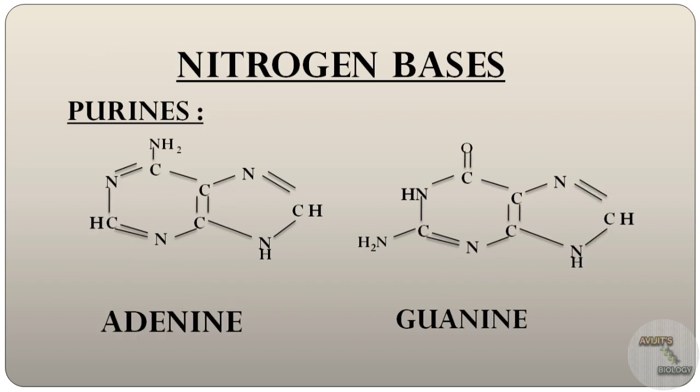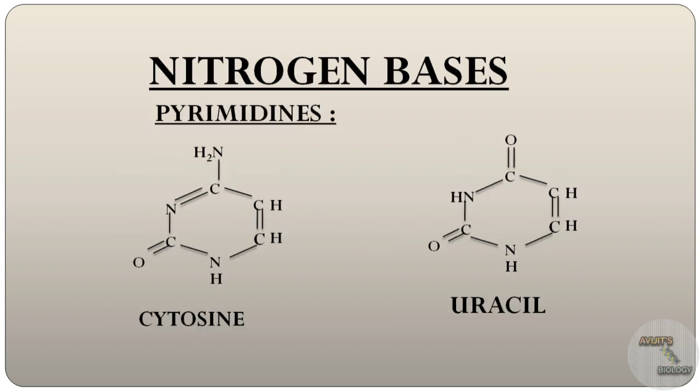The nitrogenous bases having a purine ring are adenine and guanine, like DNA. But the nitrogenous bases having a pyrimidine ring are cytosine and uracil. Uracil is present in RNA, which replaces the thymine of DNA.